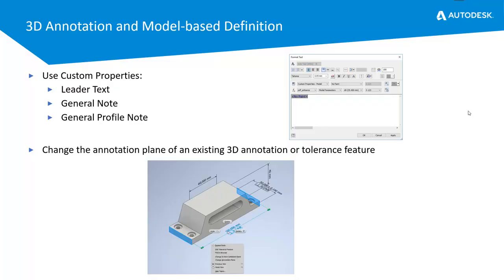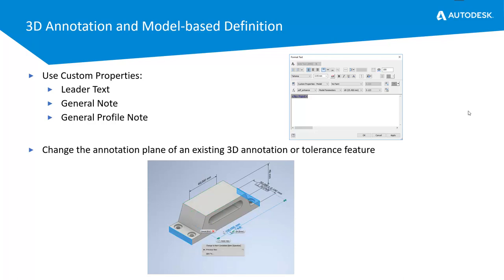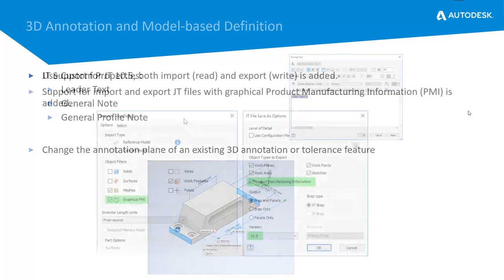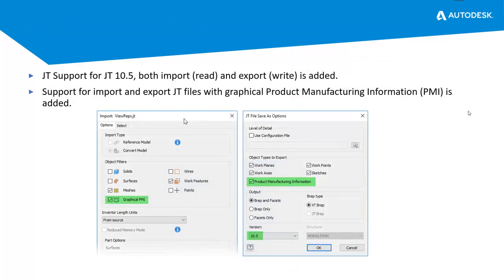3D annotations and MBD have had a few updates: you can now use custom properties in notes and change the annotation plane of an existing 3D annotation or tolerance feature. Additionally, there's now JT support for JT 10.5 which can be read and written, and support for import and export of JT files with graphical PMI information.